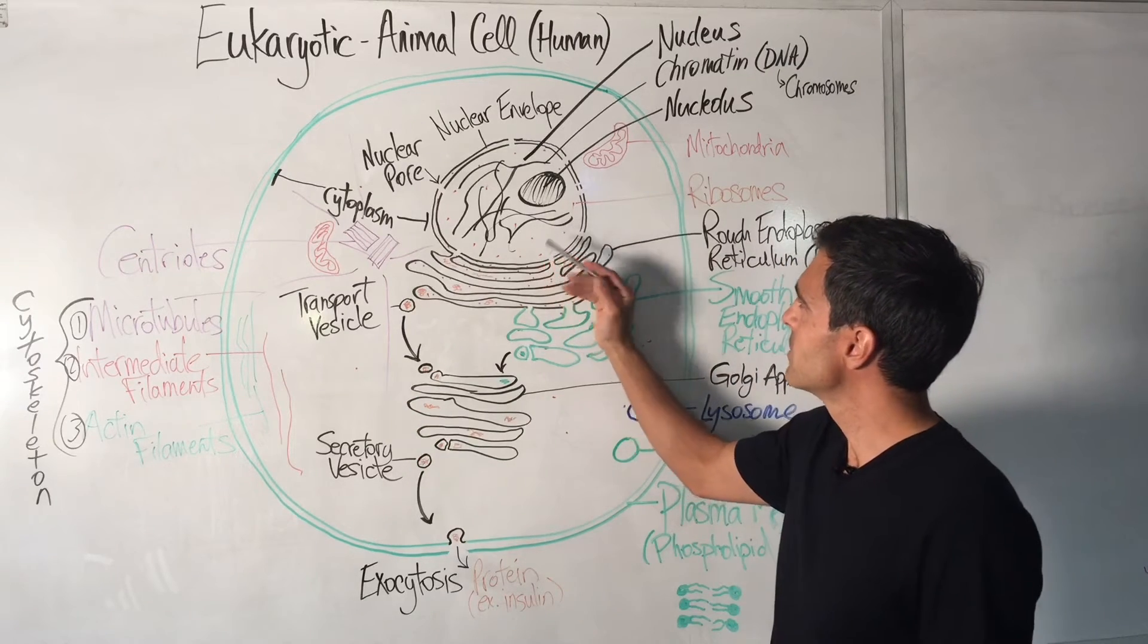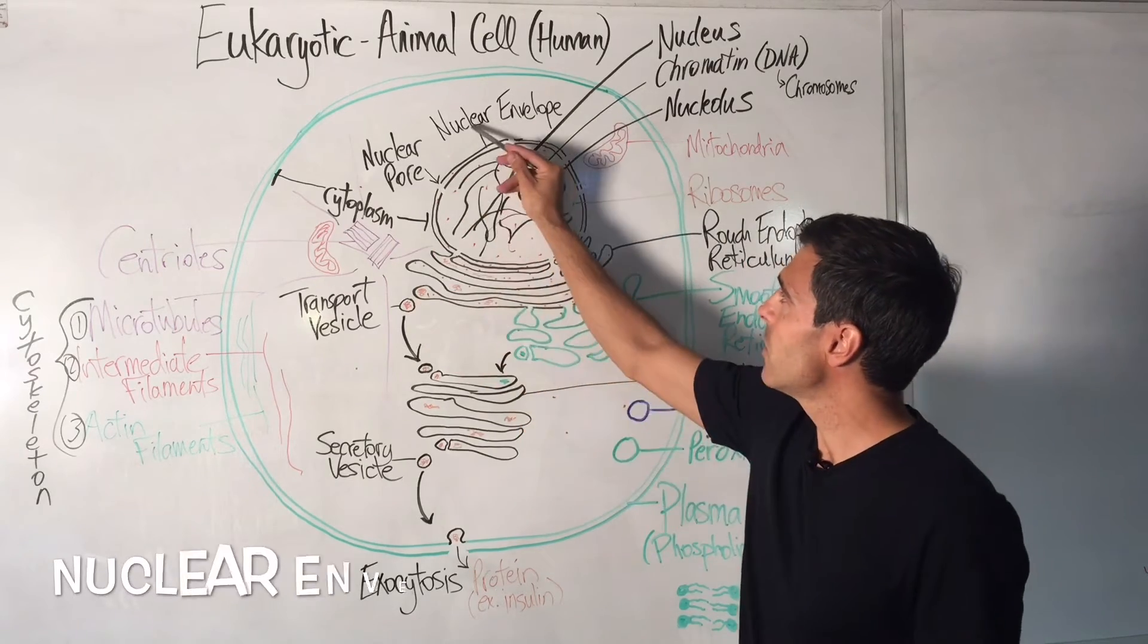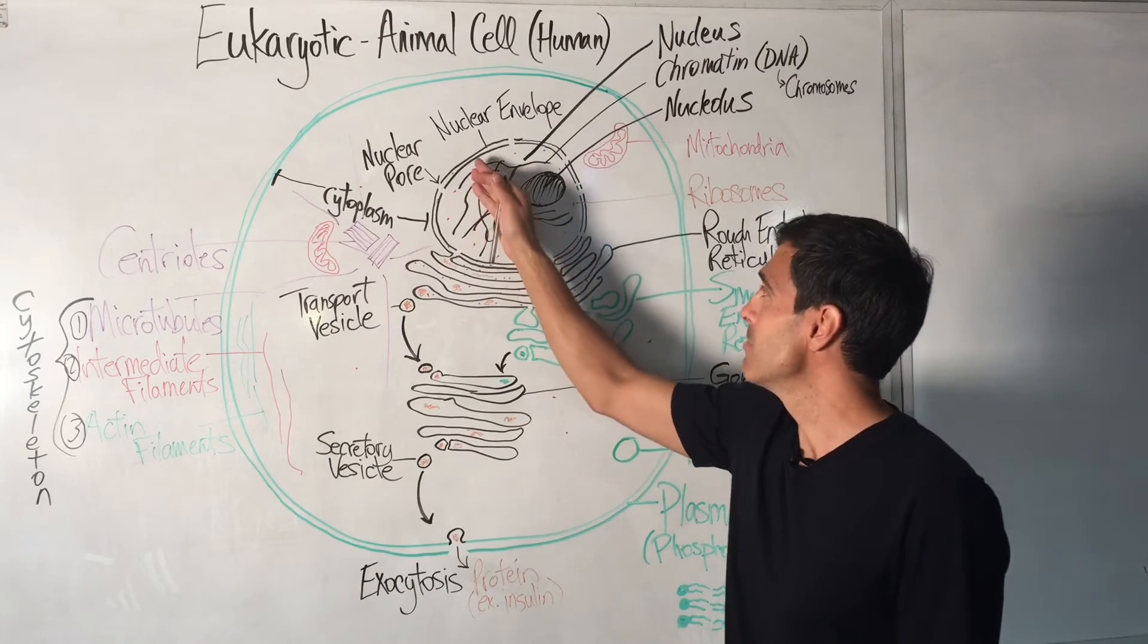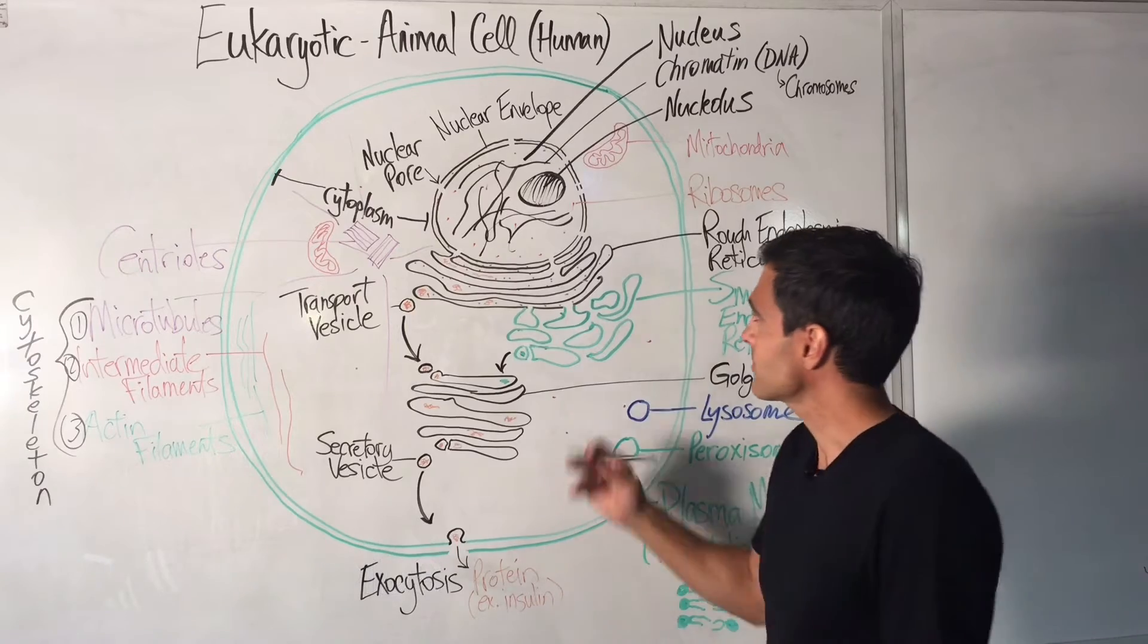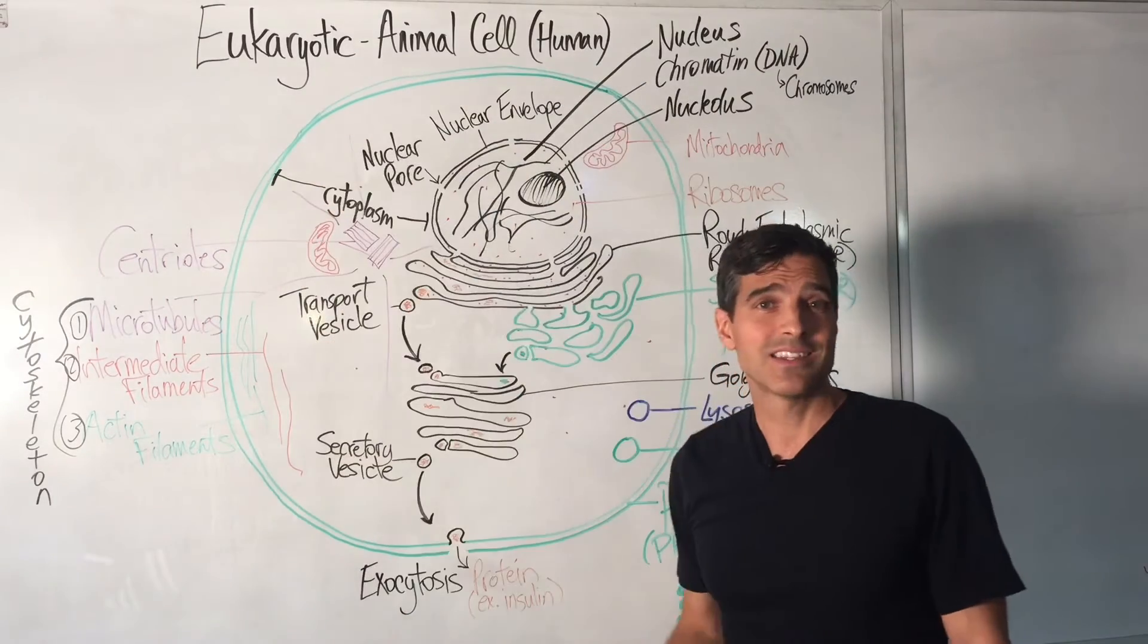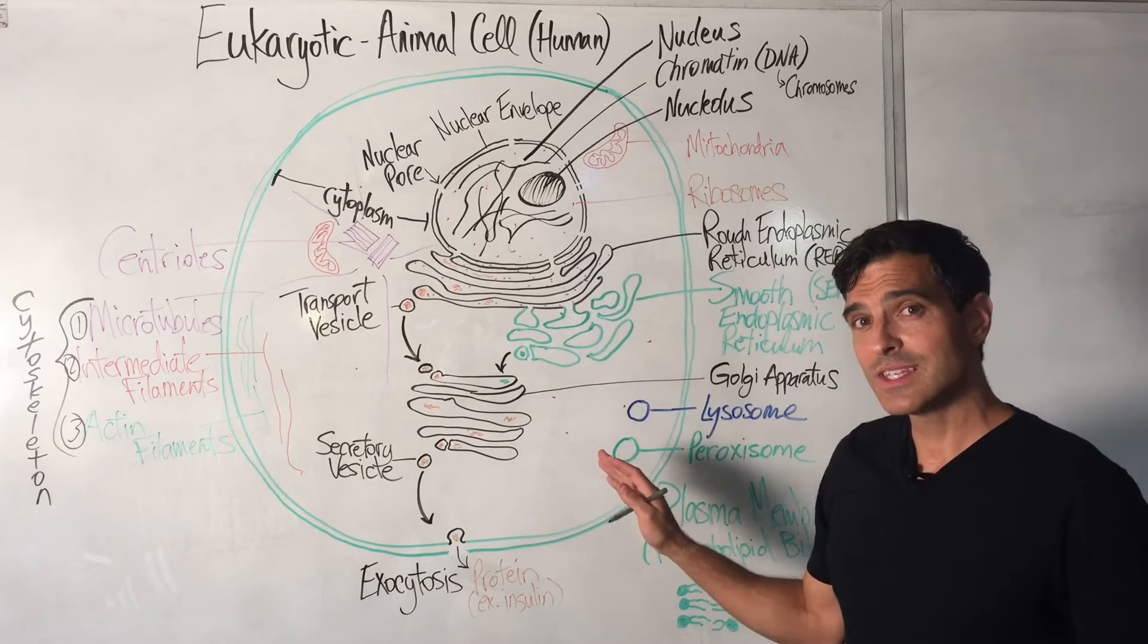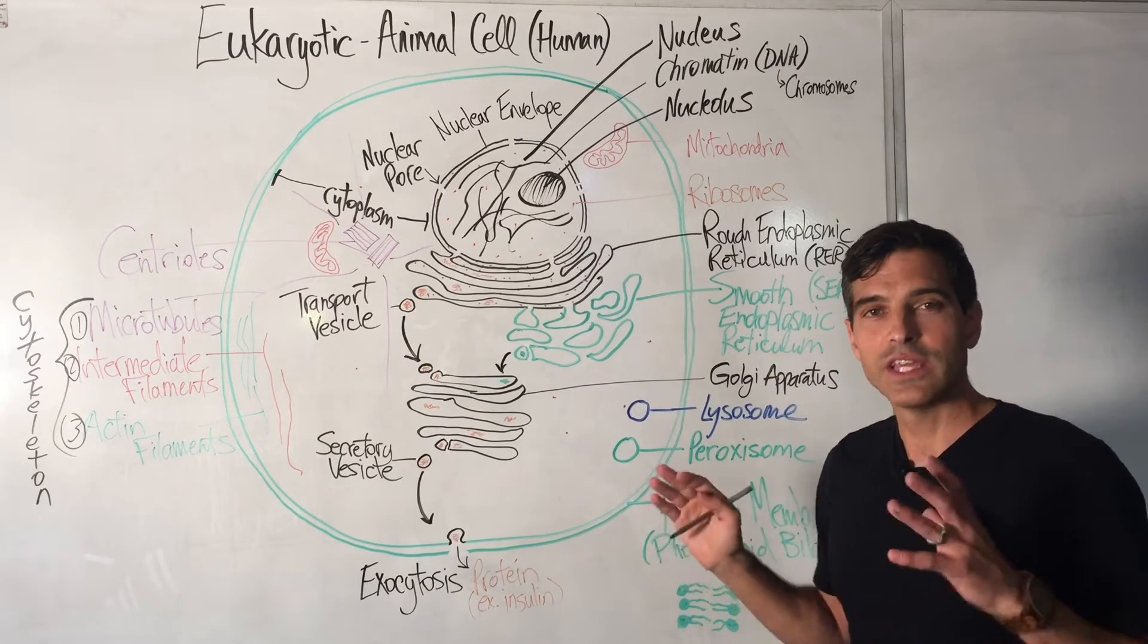Something I forgot to mention is the lining of the nucleus, which is called the nuclear envelope. This consists of a phospholipid bilayer. Just like over here, we have the plasma membrane, which is the outer lining of the cell, and that's a phospholipid bilayer as well. You will see, as we go through this, that phospholipids are actually everywhere.